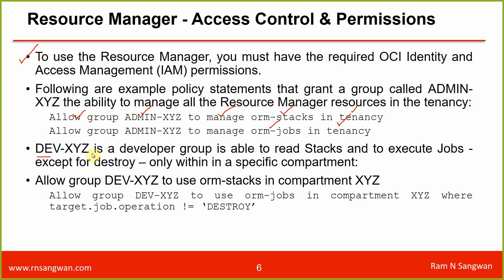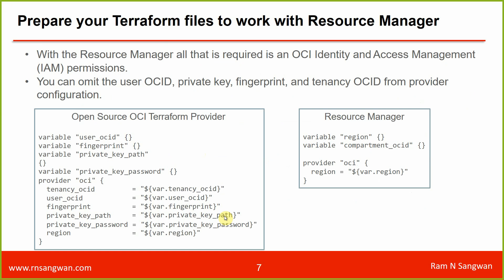A developer group 'dev-admin-xyz' can read stacks and execute jobs except destroy, within a specific compartment. You can apply fine-grained policy: 'allow group dev-xyz to use orm-jobs in compartment xyz where request.operation != destroy.' This restricts users to run all Terraform jobs except destroy. All that's required is OCI IAM permissions — you can omit the user OCID, private key, fingerprint, and tenancy OCID from the provider configuration.